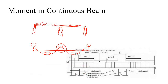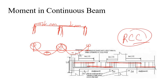We have put some extra rebar at the top of each support because of the hogging bending moment, and we also need to provide some extra bottom rebar in the span locations. This is the basic concept for designing any RCC continuous beam.